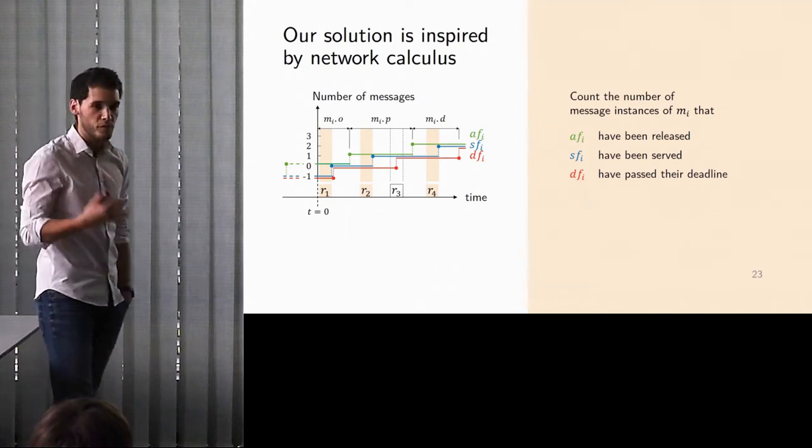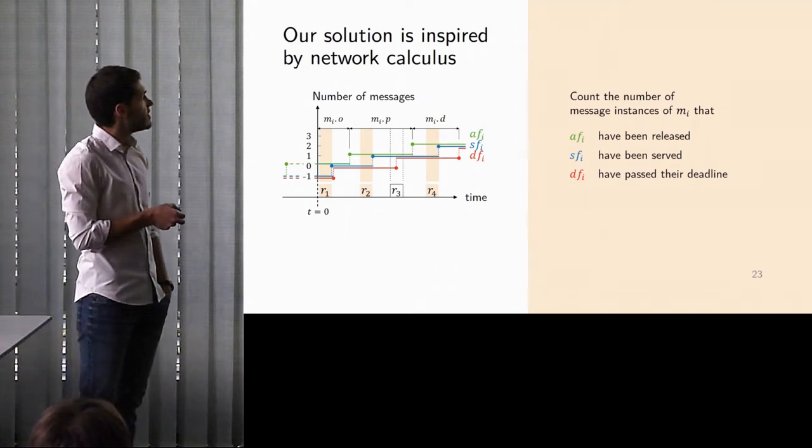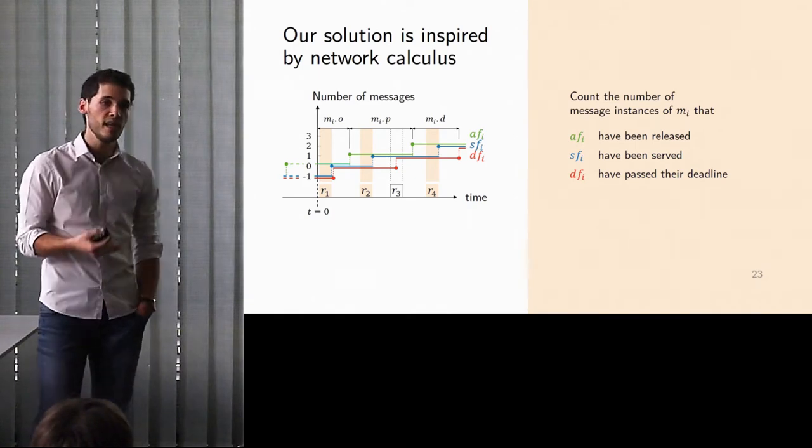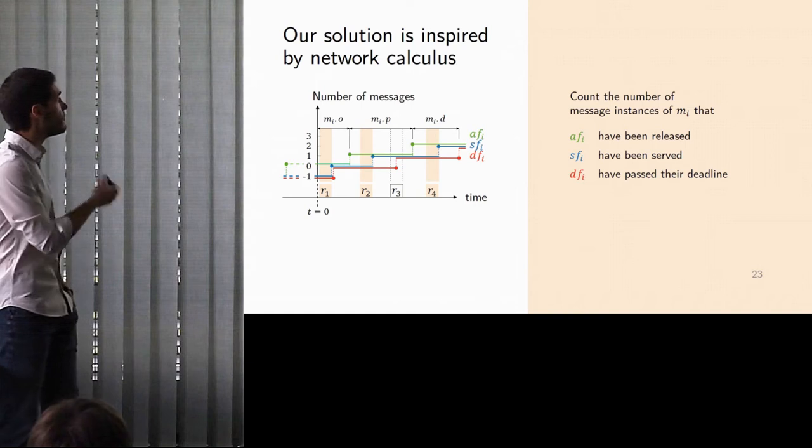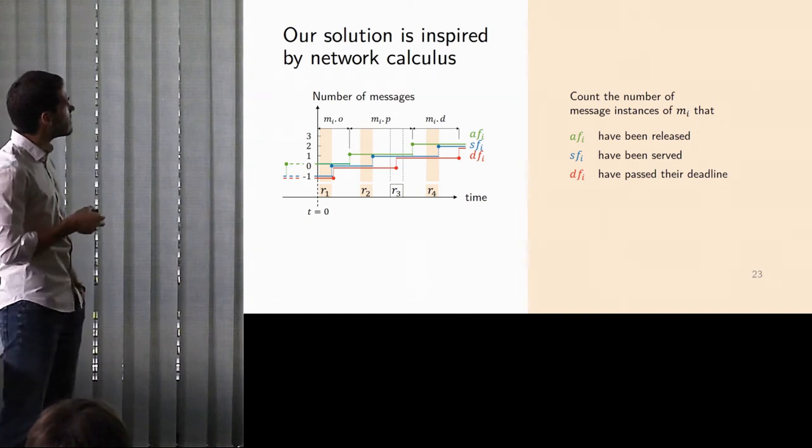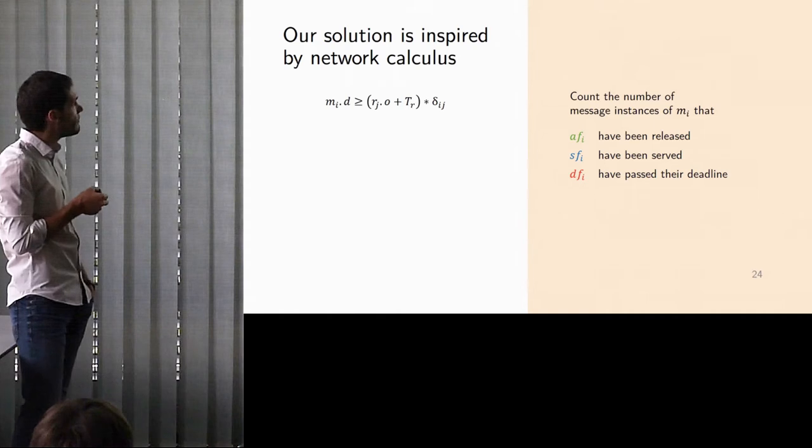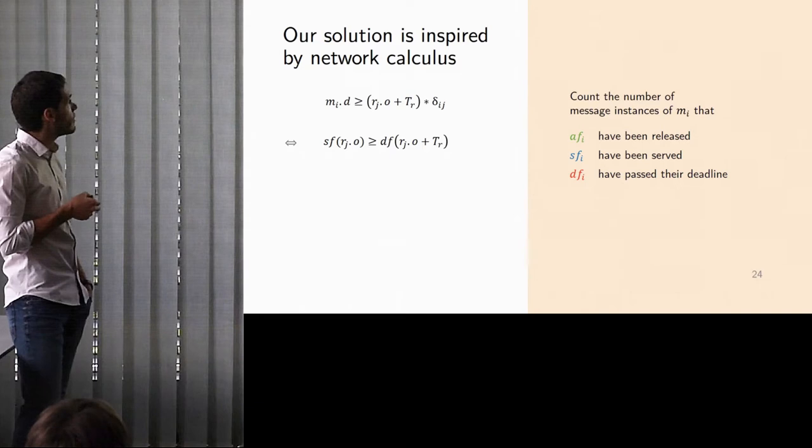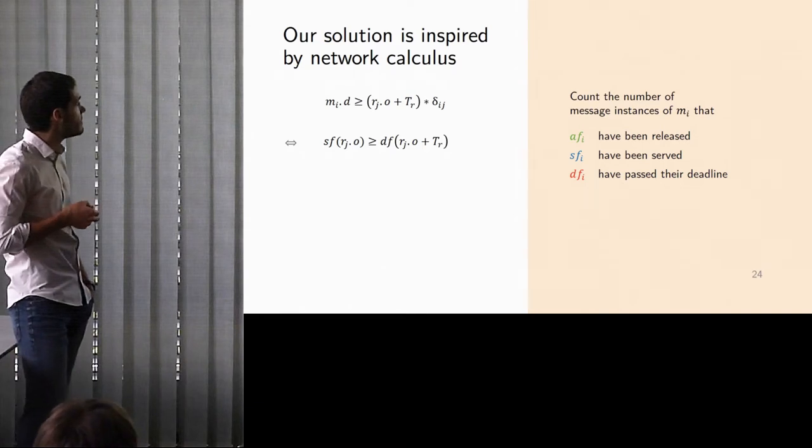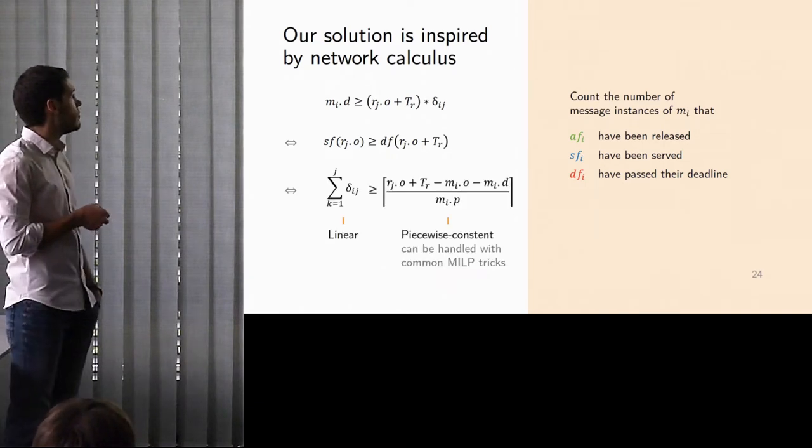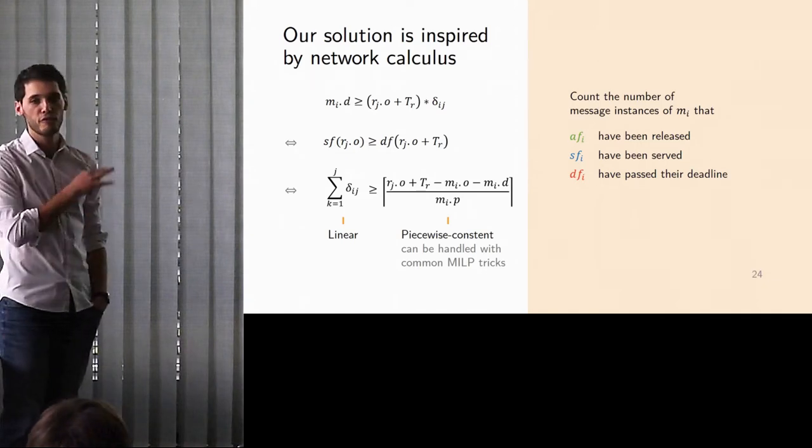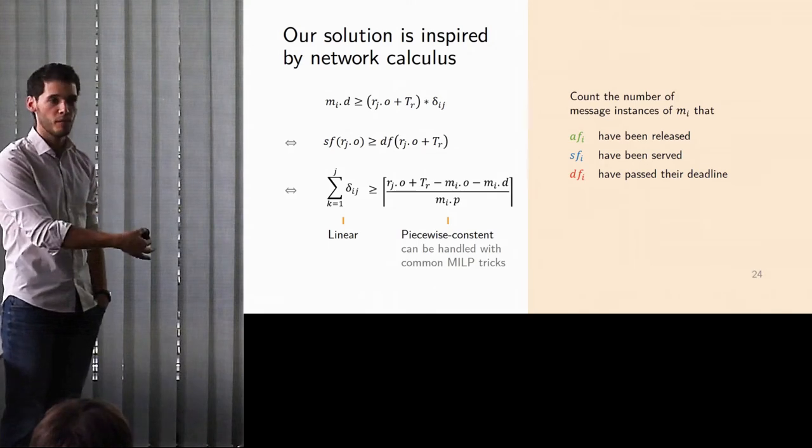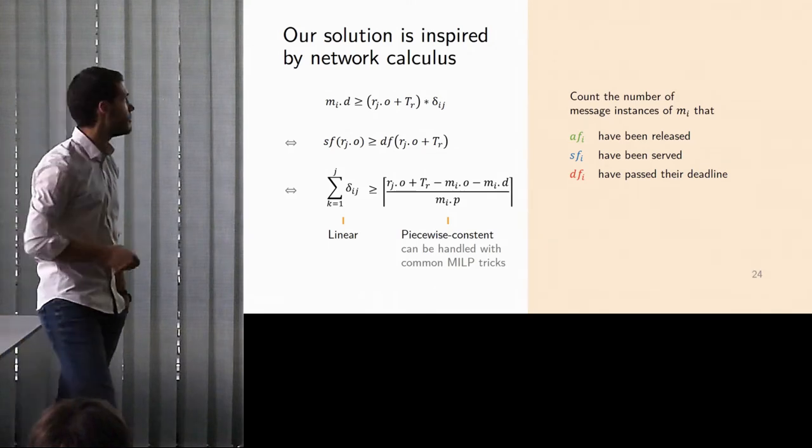So we found a trick to work around this issue and combine the rounds with a classical linear program, which is somehow inspired from network calculus, where the idea is to define functions that count for each message the number of instances that have been released, have been served, and have passed their deadline. And the trick is that we can, using those functions, we can reformulate this non-linear constraint into something linear. And then if we look at how those functions are being defined, these are actually either a linear term or a piecewise constant. And both those things are things that we know how to implement within a MILP. With some tricks, but that's kind of commonly known.